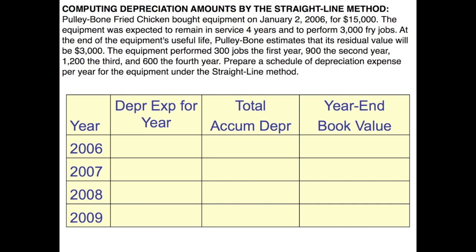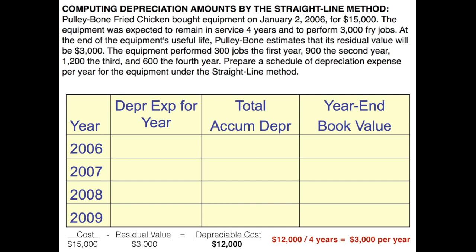The first thing we have to do is calculate depreciable cost — that's cost less residual value. The cost of the asset was $15,000 and residual value is $3,000, leaving us a depreciable cost of $12,000. Now we multiply that times our rate, which is 1 divided by the useful life — in this case, 1 over 4. So we take $12,000 divided by 4 years, which equals $3,000 per year.